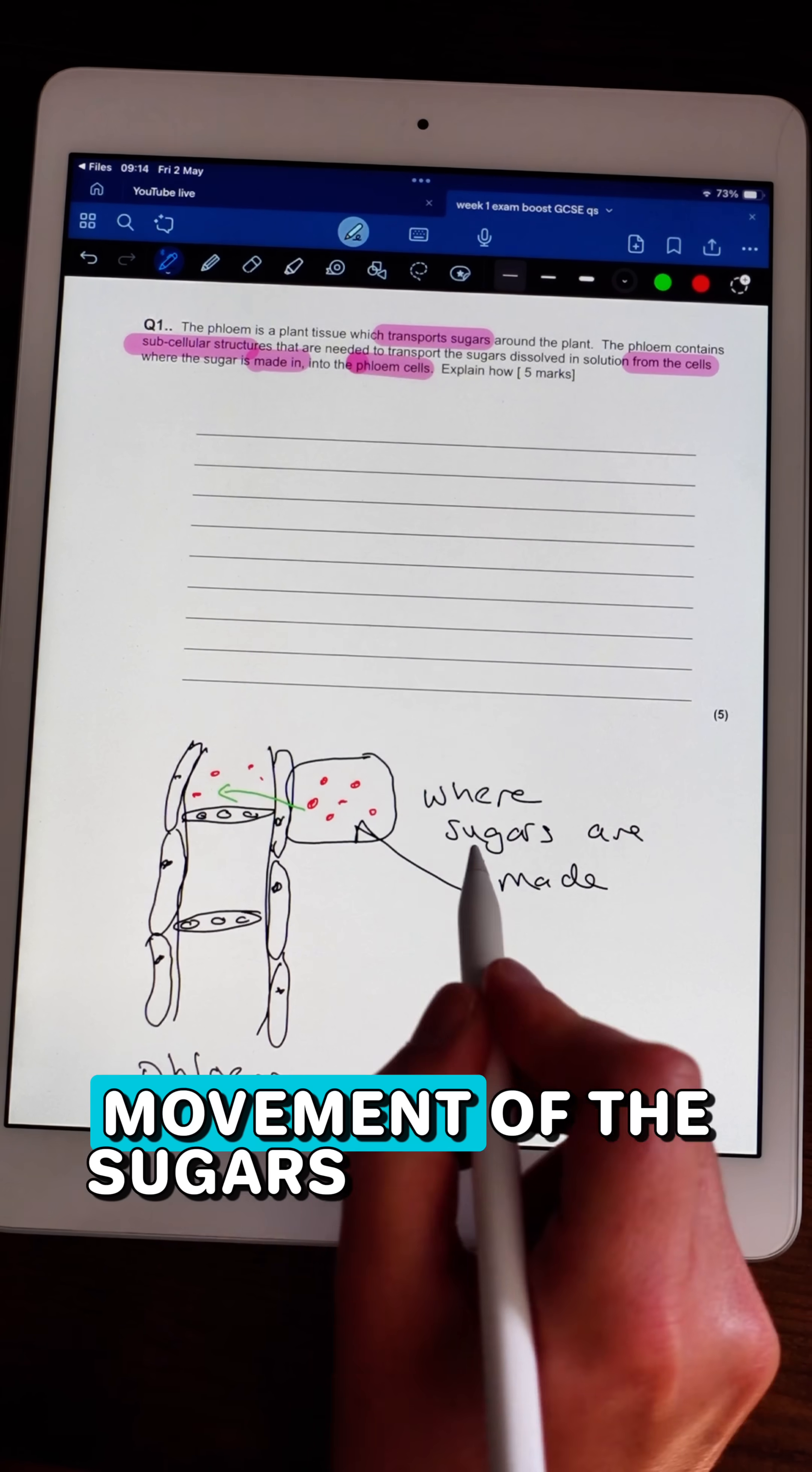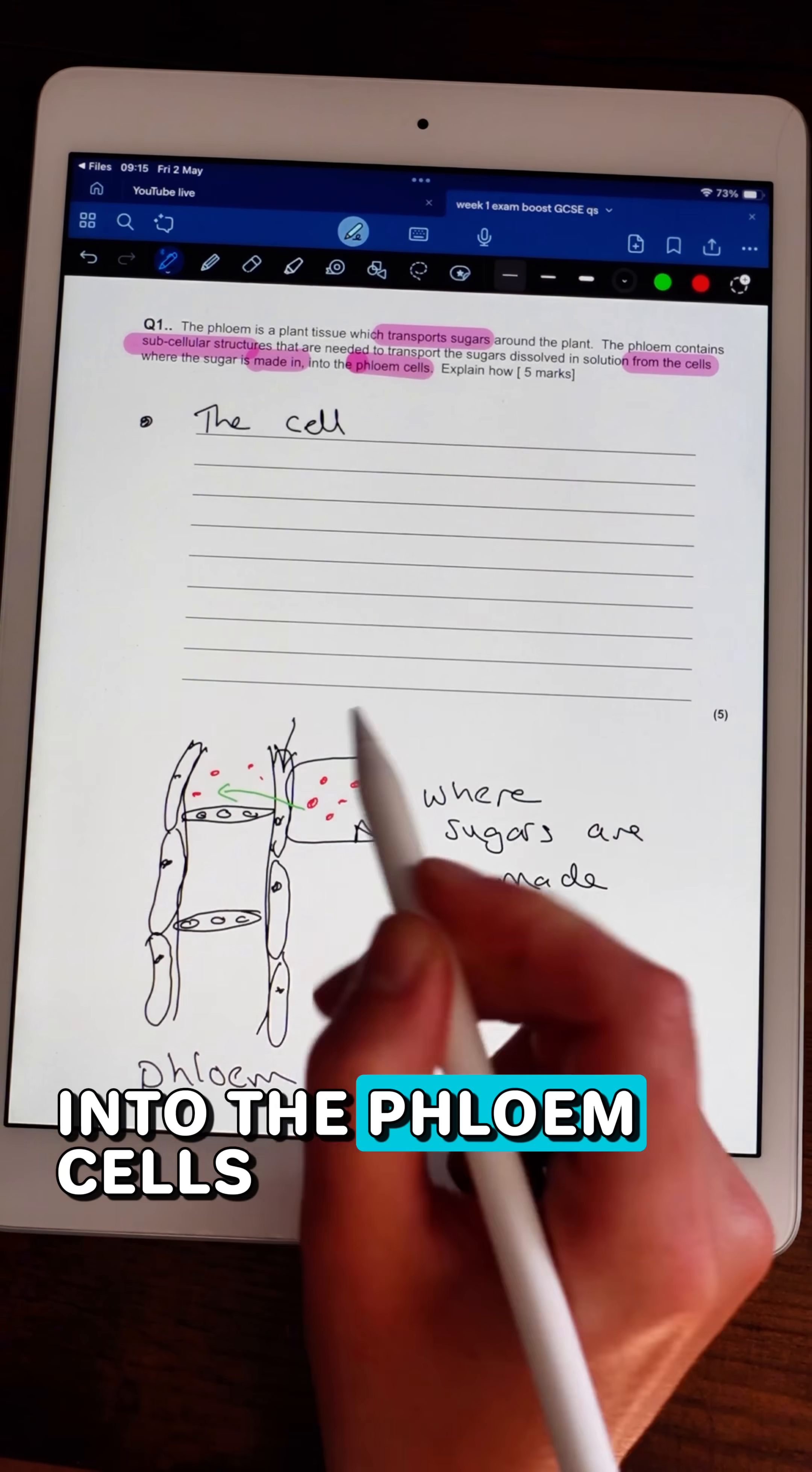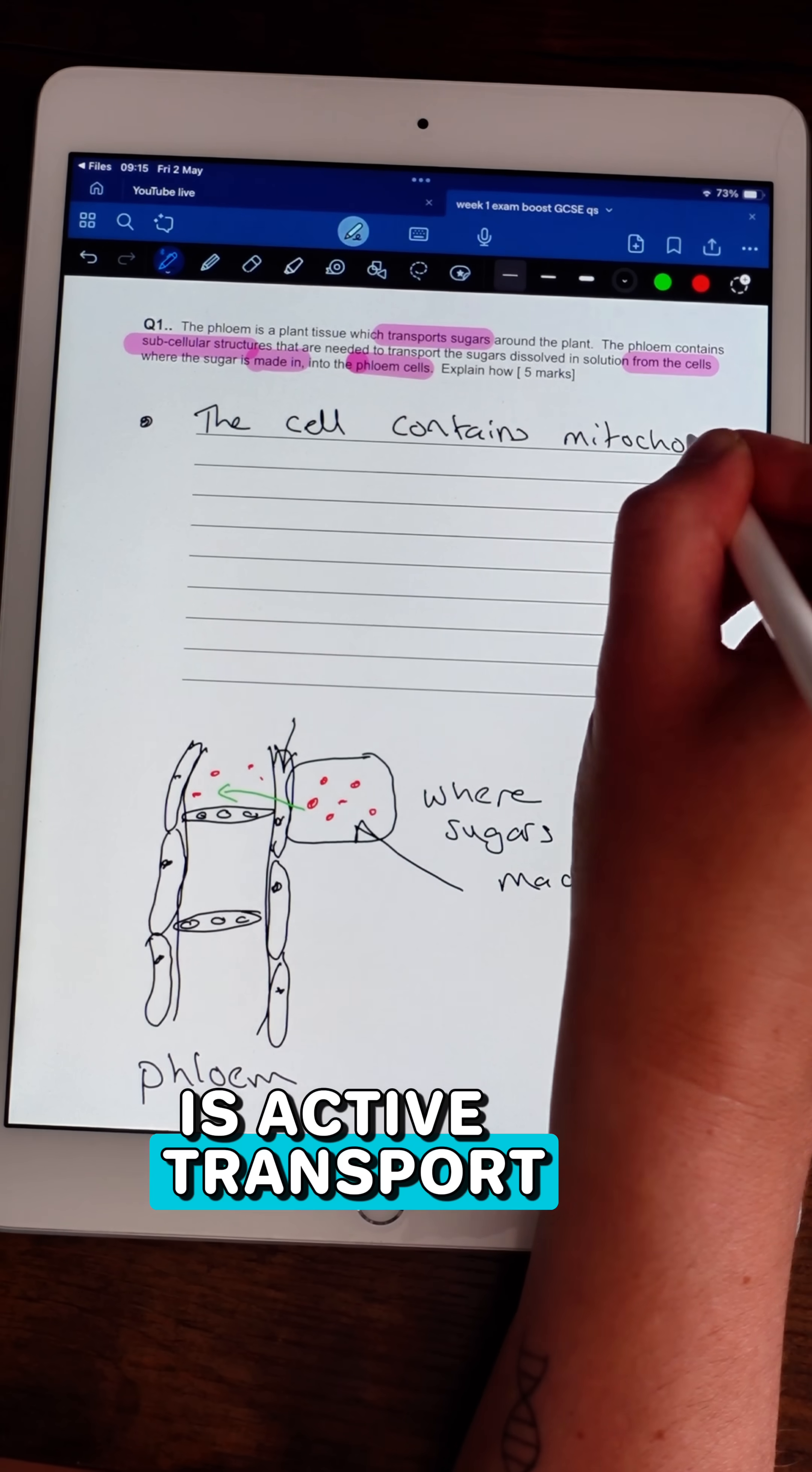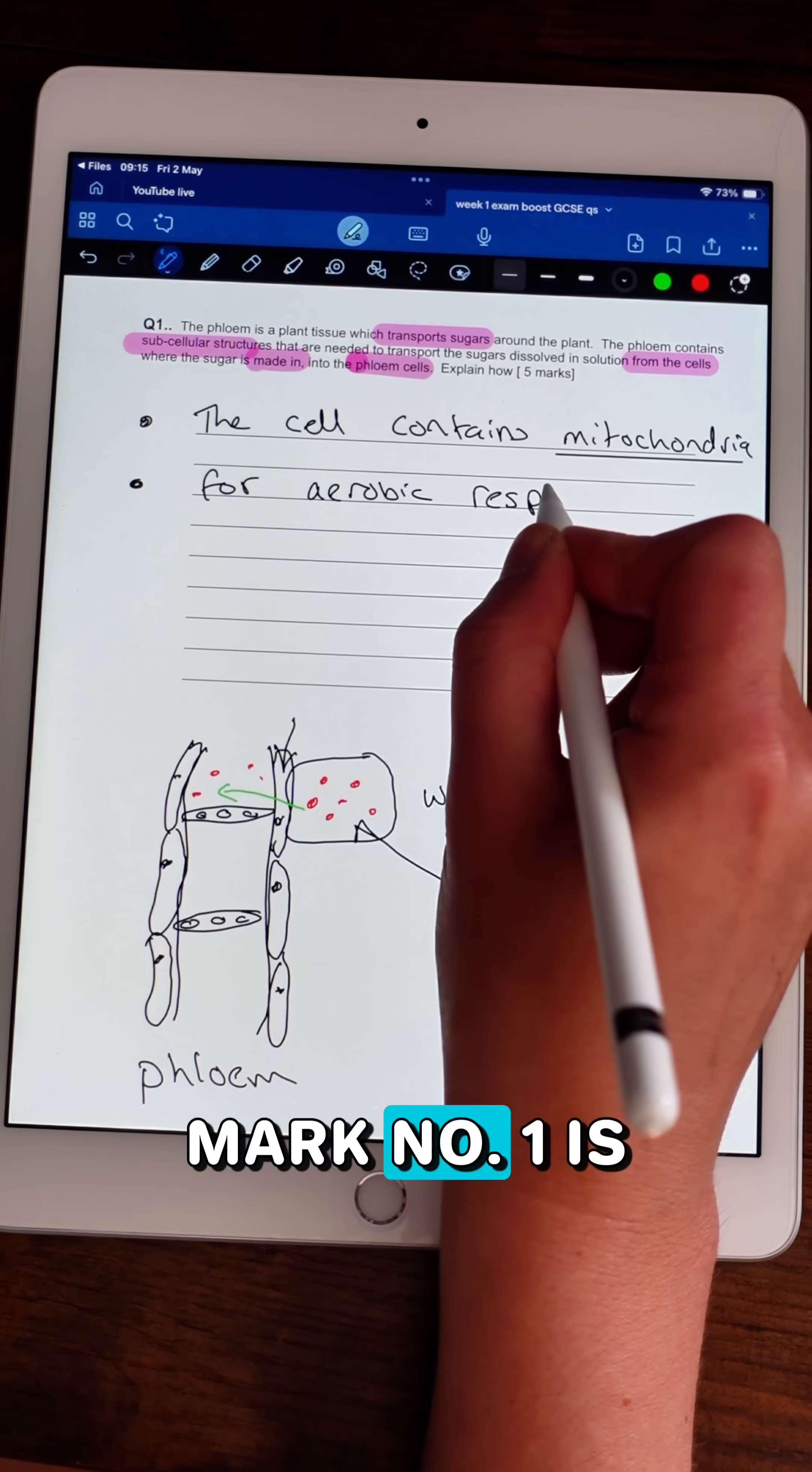Fact that the movement of the sugars from the cells that they're made in photosynthesis into the phloem cells is active transport. So that means it requires energy. In order to get that energy, mark number one is we need...